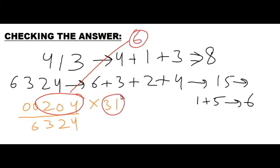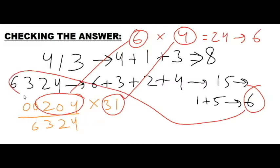Here I will write 6, the digit sum of 204. And then digit sum of 31 is 3 plus 1, that is 4. Now when I multiply 204 by 31, our answer is 6324. Now if I multiply their digit sum, 6 times 4 is 24. And digit sum of 24 is 2 plus 4 is 6. And we know the digit sum of 6324 is 6.